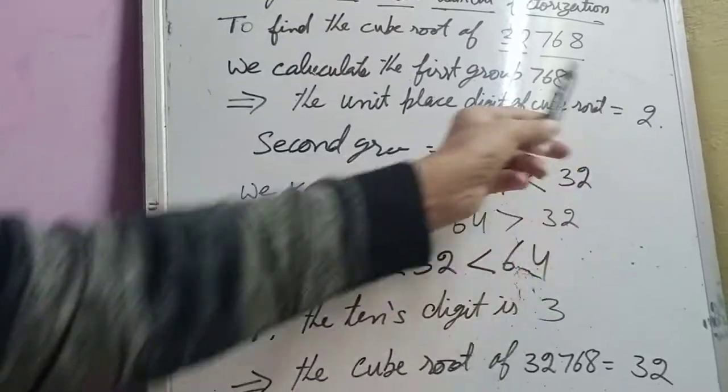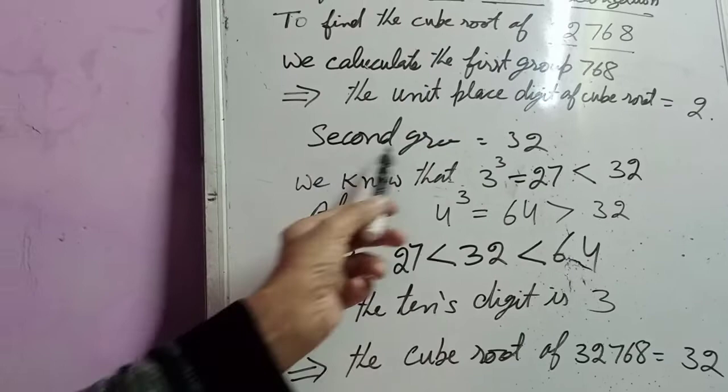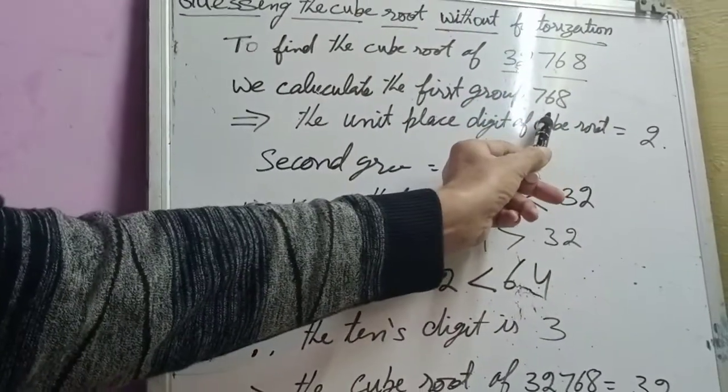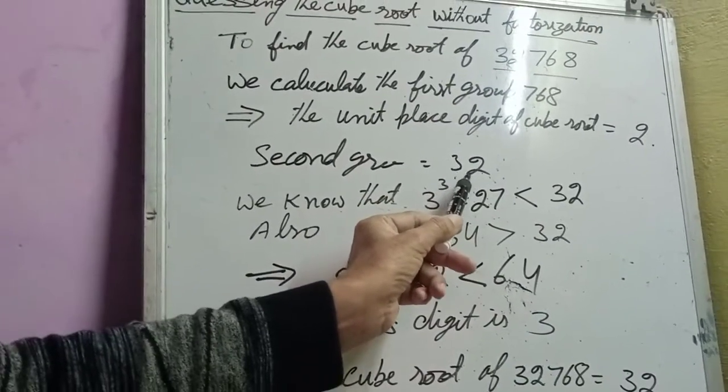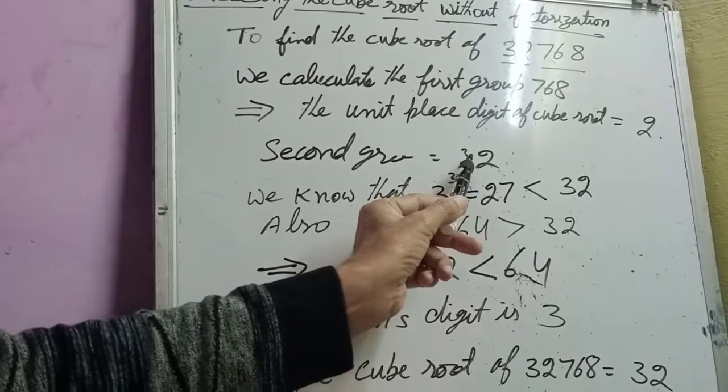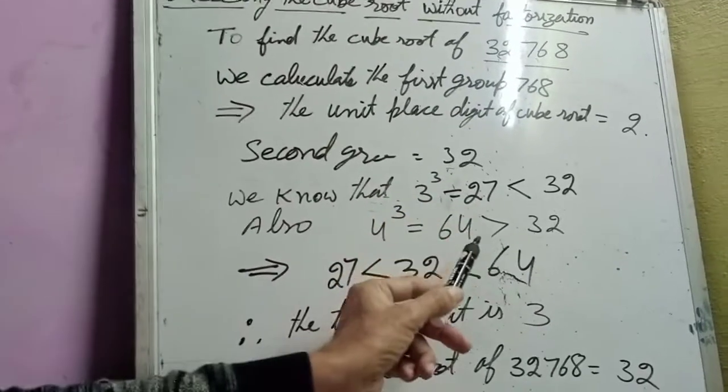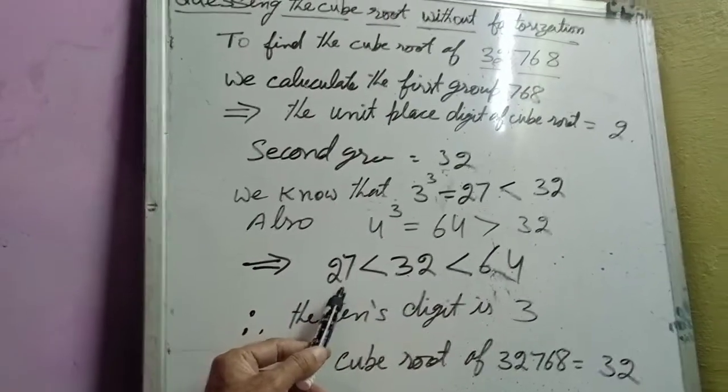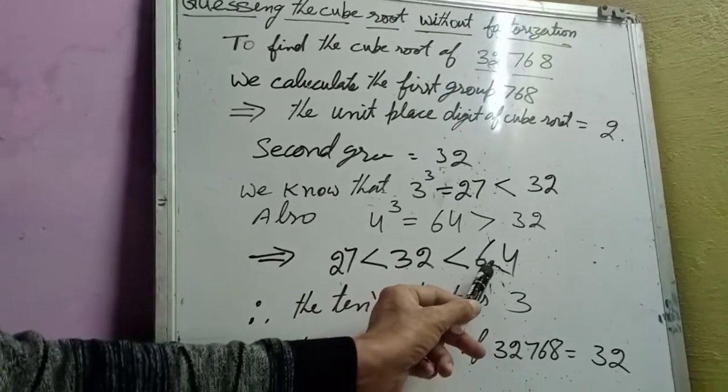Now having got the unit digit 2, let's calculate the tenth digit by taking the second group. The first group we have already calculated, the second one comes here. Now this second group, 32, is greater than the perfect cube 27 but smaller than the perfect cube 64.